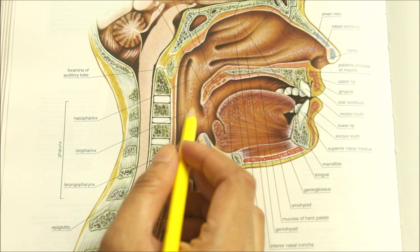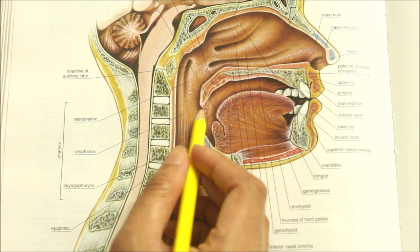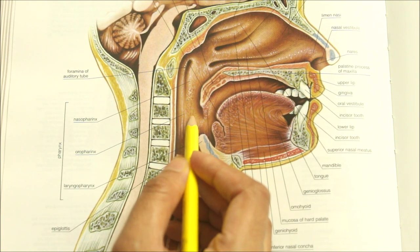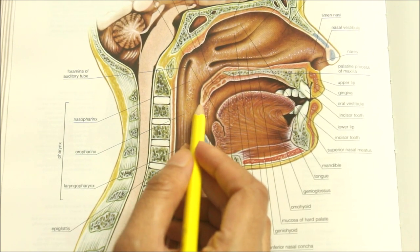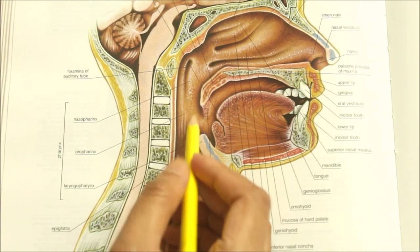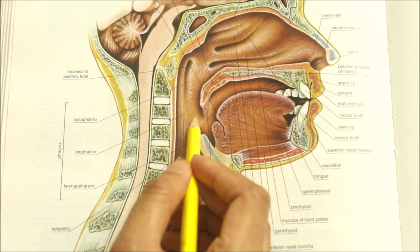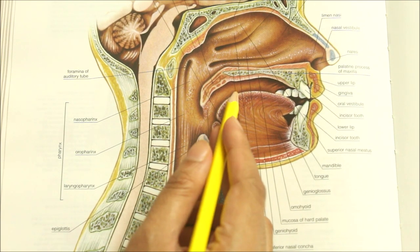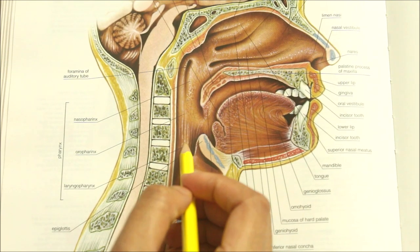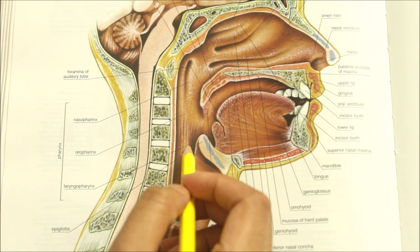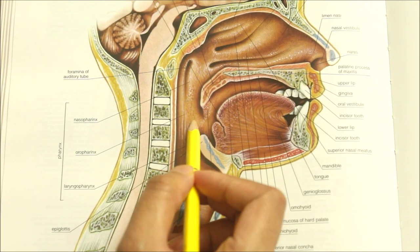Now let's learn about the oropharynx, the second part of the pharynx. It is situated behind the oral cavity. It extends from the soft palate above to the upper border of the epiglottis below. It communicates anteriorly with the oral cavity, above with the nasopharynx and below with the laryngopharynx. Its nerve supply is by the 9th and 10th cranial nerves.